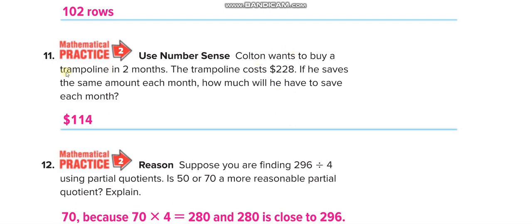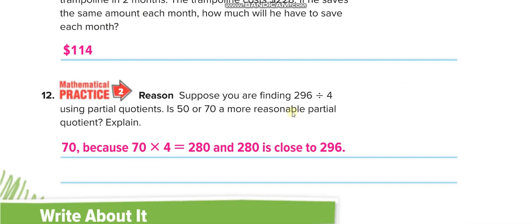Colton wants to buy a trampoline in 2 months. The trampoline costs $228. If he saves the same amount each month, 228 divided by 2 is 114. Suppose you are finding 296 divided by 4 using partial quotients — is 50 or 70 a more reasonable partial quotient? For this question you divide using long division, and the answer is closer to 70. 70 is more reasonable, because 70 times 4 is 280, which is close to 296.